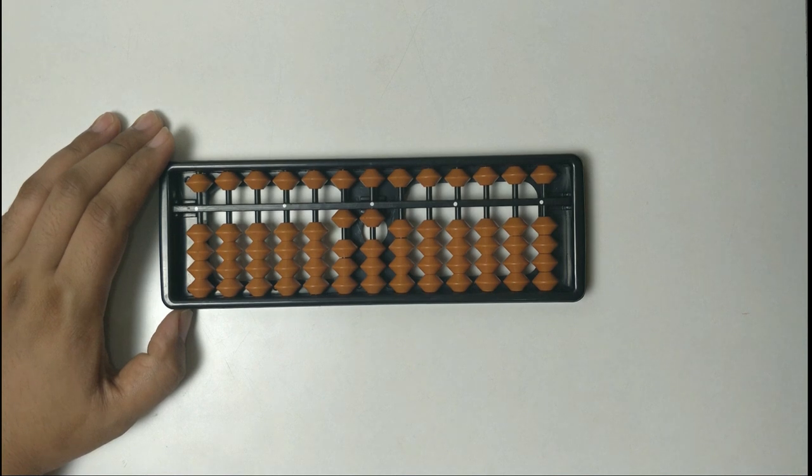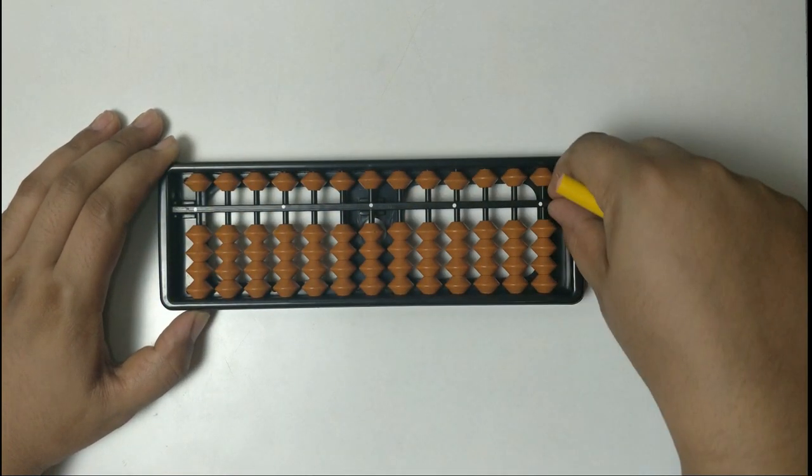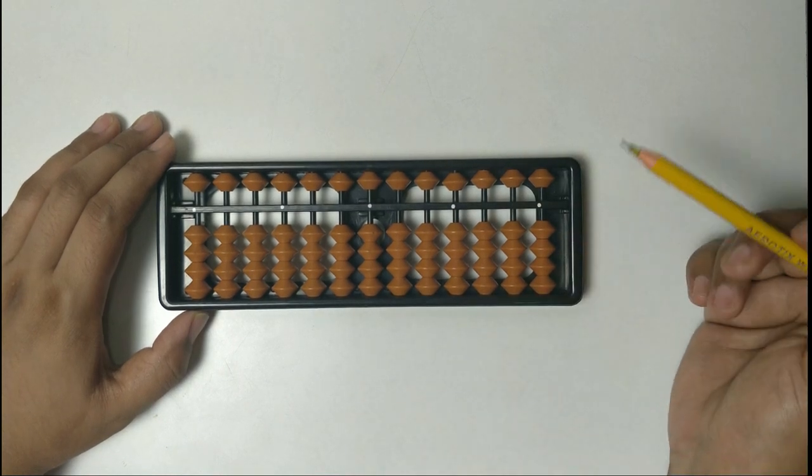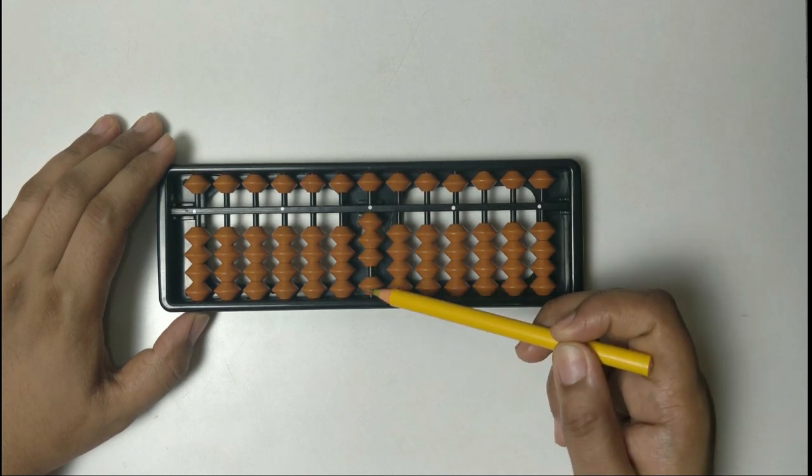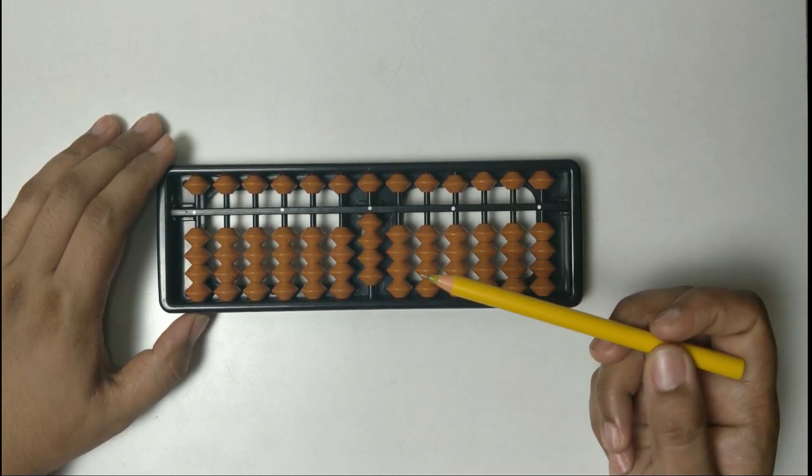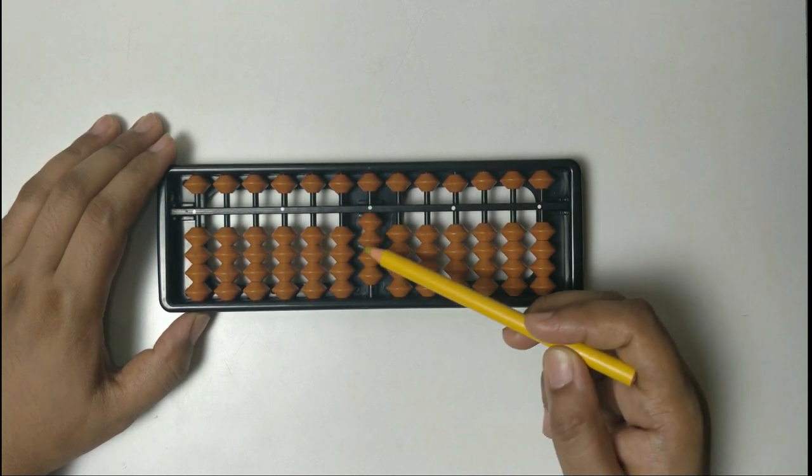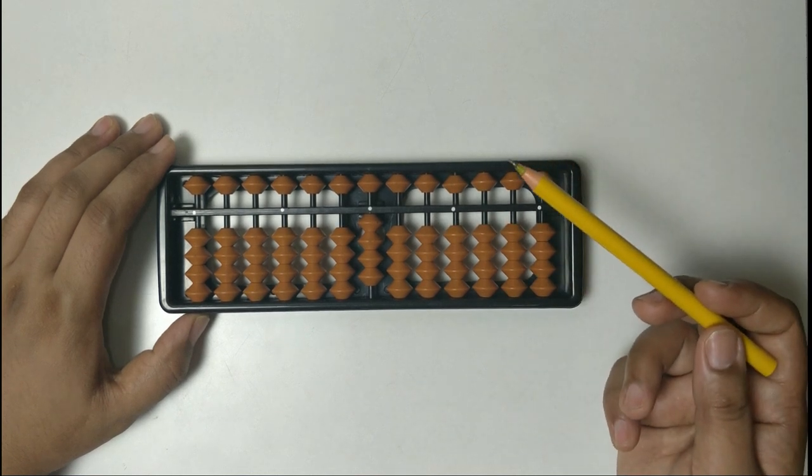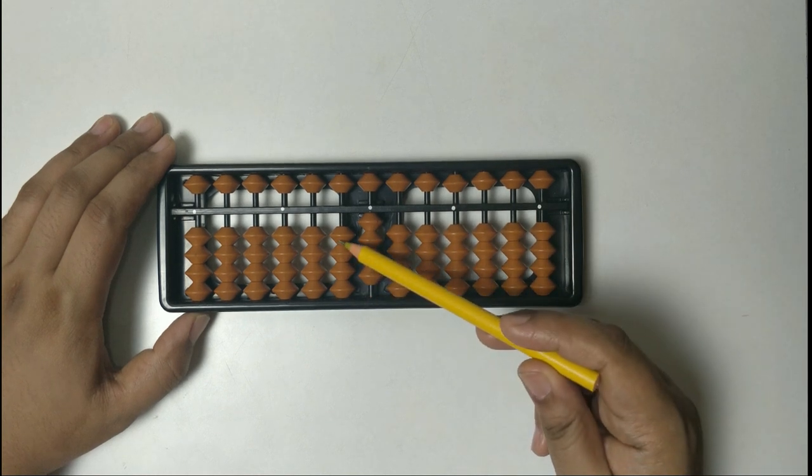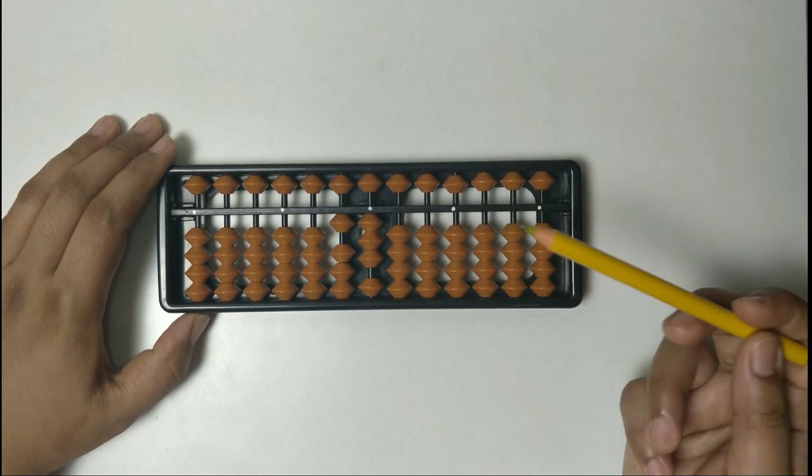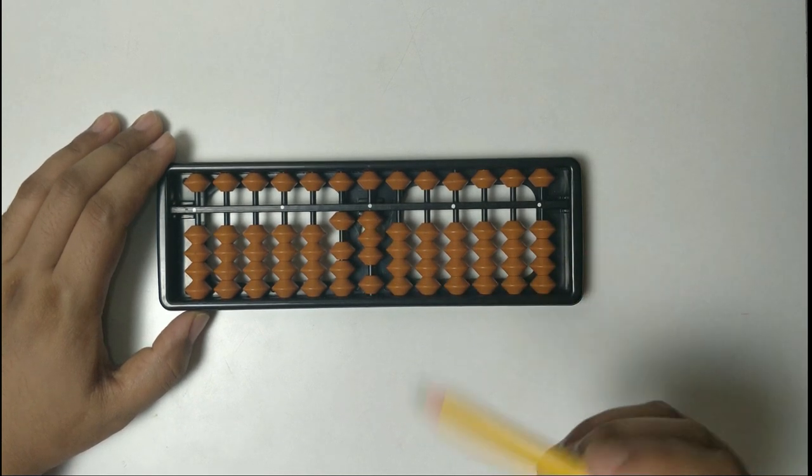Next question is 2 plus 2 plus 9. Can we solve on this row? No, plus 9. For plus 9 we can do plus 10 minus 1. So answer is 10, 11, 12, 13. 13 is the answer.